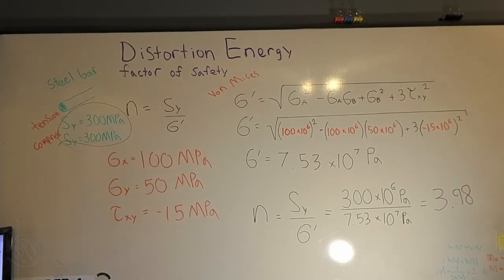Alright, so putting that into our calculator, we get a factor of safety of 3.98. And I'm really glad this came up because it's a really bad thing to round up your factors of safety.